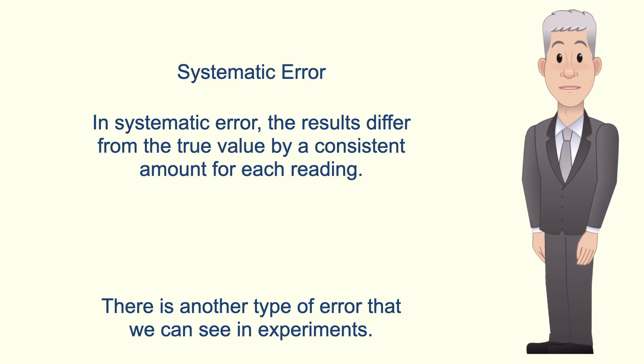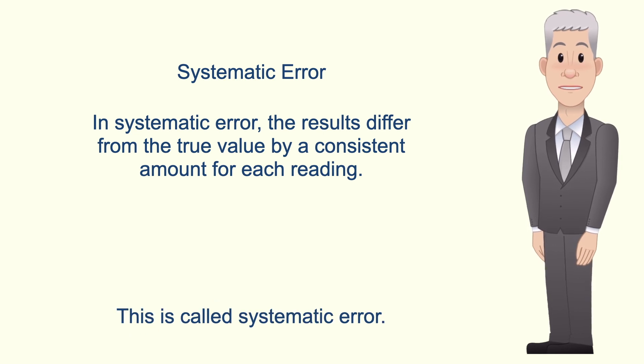Now there is another type of error that we can see in experiments. This is called systematic error. In systematic error, the results differ from the true value by a consistent amount for each reading.